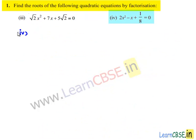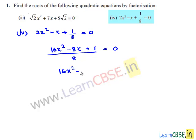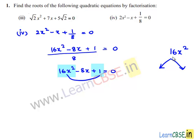Moving on to the fourth bit, the given equation is 2x squared minus x plus 1/8 equals 0. Taking LCM as 8, this becomes 16x squared minus 8x plus 1 equals 0. The product of the first term and the last term is 16x squared. We need two terms such that their product equals 16x squared and their sum equals minus 8x.